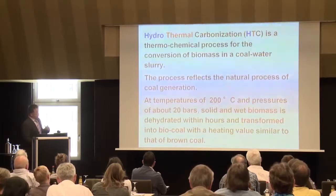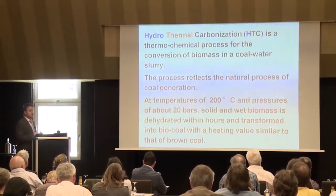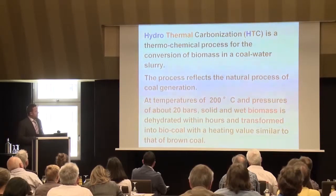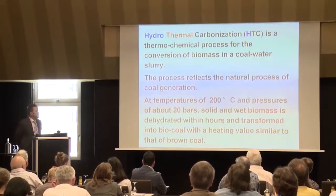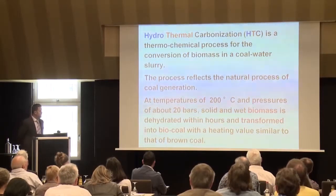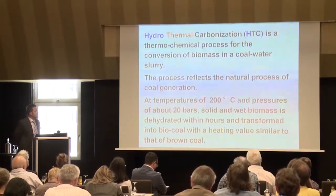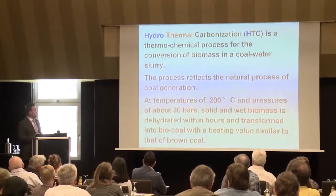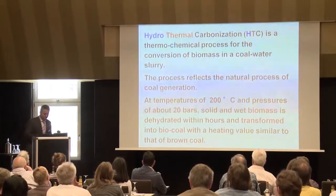Hydrothermal carbonization is a thermochemical conversion process that transforms biomass within hours into a brown-coal-like slurry, reflecting the natural process of coal generation. At temperatures around 200°C and pressures of about 20 bar, biomass is dehydrated and transformed into a bio-coal with a heating value similar to brown coal. The process is essentially like a pressure cooker — though don't try this in an actual pressure cooker, as 200°C and 20 bar is far too much.